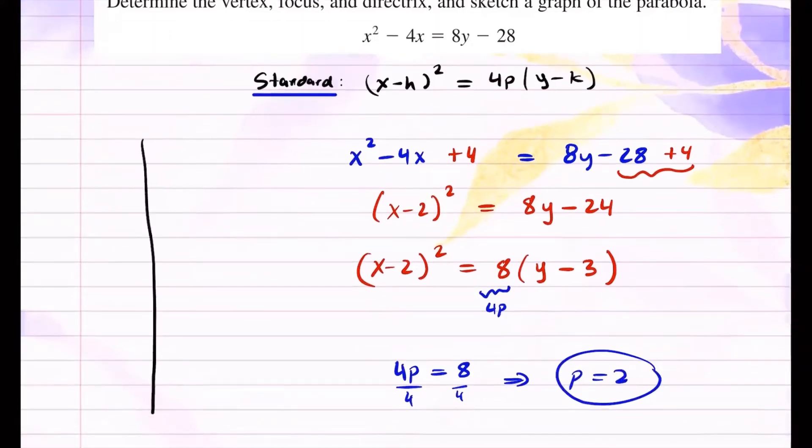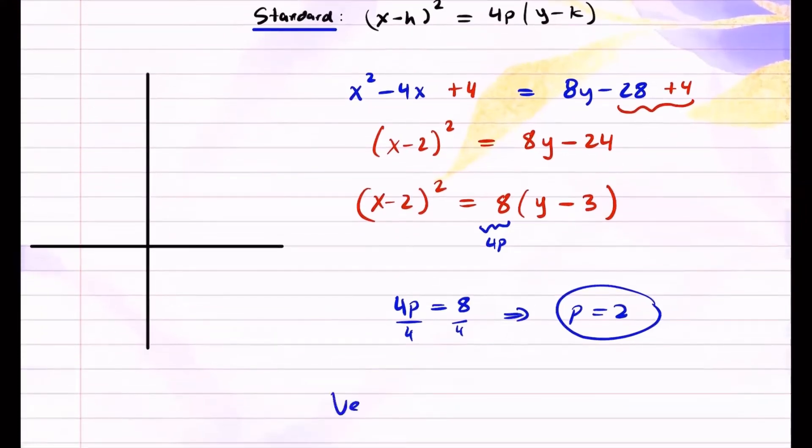Let's go ahead and graph. So since it is x squared, we know the parabola is going to open upward. And also because p is positive. So it's a parabola vertical facing up. So the vertex is these coordinates right here, but the opposite sign. So the vertex of this parabola is going to be 2 comma 3. So the x coordinate is 2, y coordinate is 3. So this is 2. This is 3. Here is my vertex.